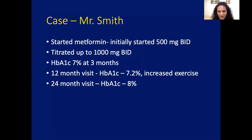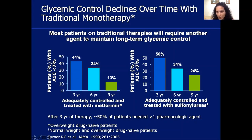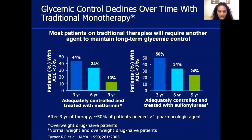Is this expected? Yes, it is. Metformin monotherapy failure is expected based on data from the UKPDS — the UK Prospective Diabetes Study — which looked at people with type 2 diabetes and whether A1C less than 7 decreases complications. What they found was that within three years, patients who were adequately controlled on metformin started losing that control. By year six, only 34% will be fine on monotherapy; by year nine, only 13% remain adequately controlled on monotherapy. The same pattern follows with sulfonylureas. Most people will fail monotherapy and will need more than one therapy.